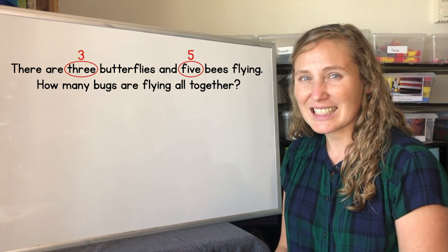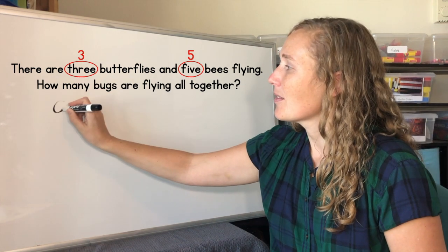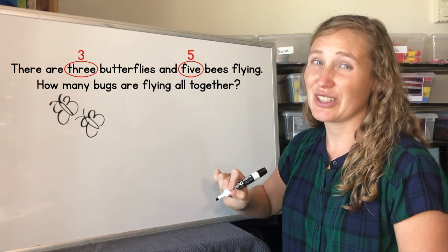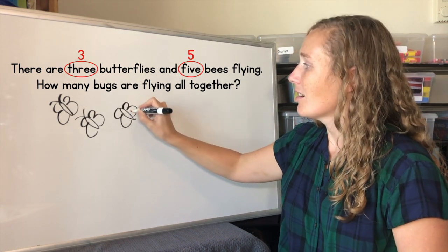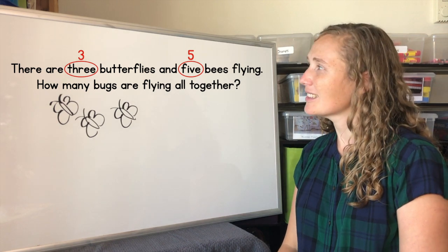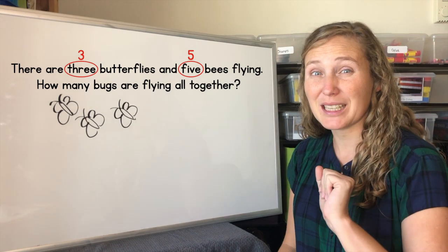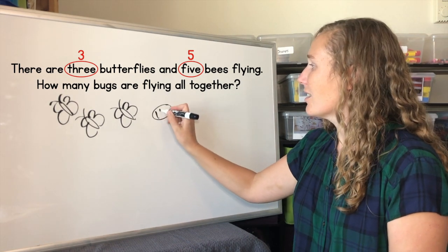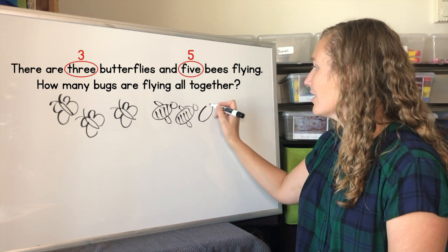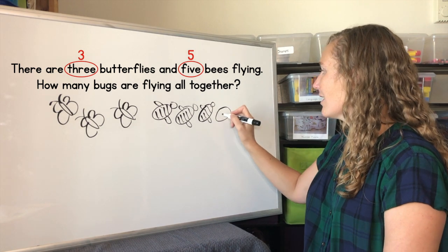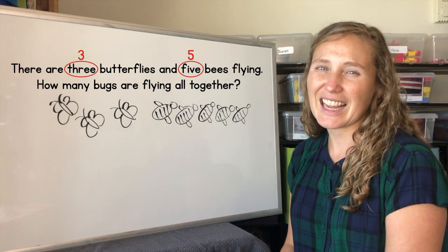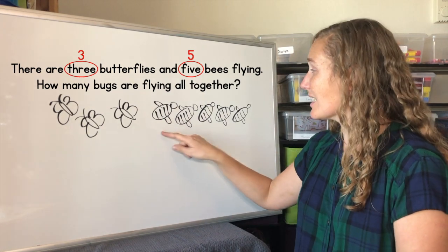Three butterflies. Let's draw three butterflies. One butterfly. Two butterflies. Three butterflies. Are you ready to draw bees? How many bees do we have? Our story tells us that we have five bees. Let's draw five bees. One, two, three, four, five. Five bees. Three butterflies and five bees.